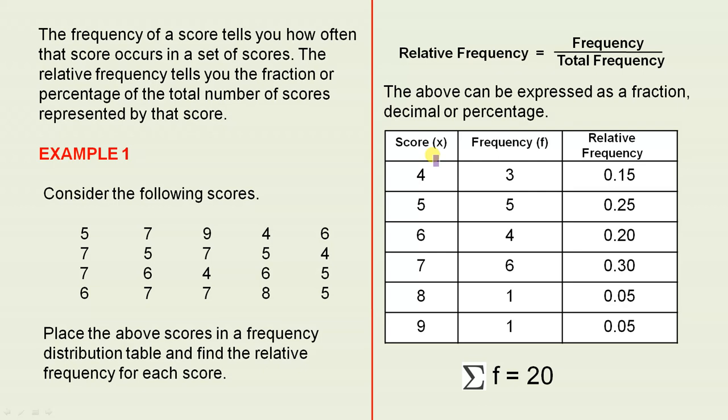The score represented by x will be 4, 5, 6, 7, 8, 9, six separate scores. This is the frequency for each of those scores.